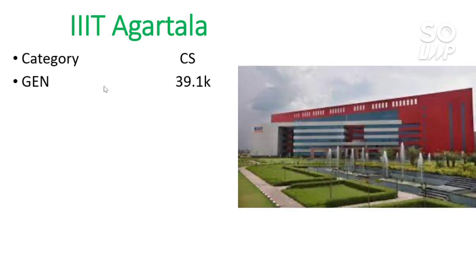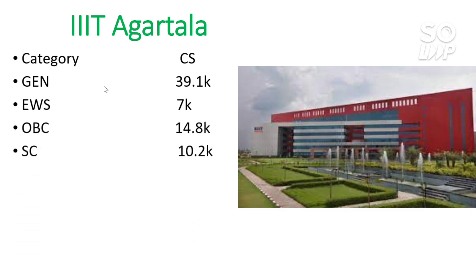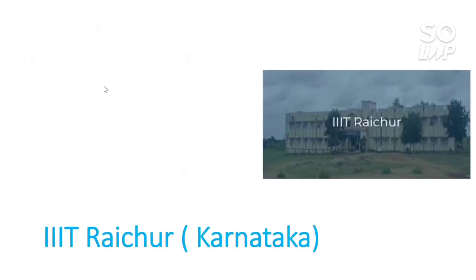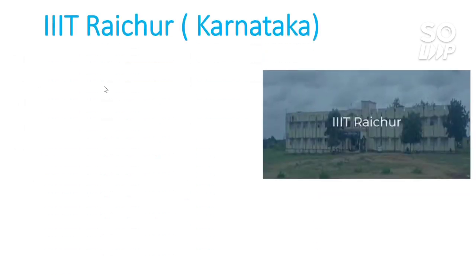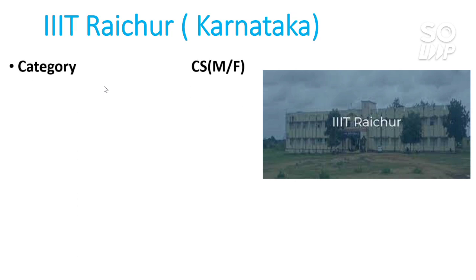Next is IIIT Agartala. This college has only one branch, which is CS. For General — 39,100. For EWS — 7,000. For OBC — 14,100. For SC — 10,200. For ST — 5,400.